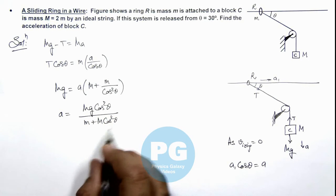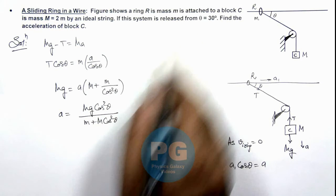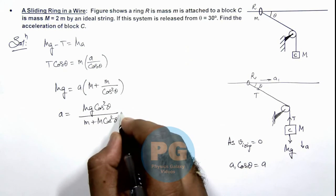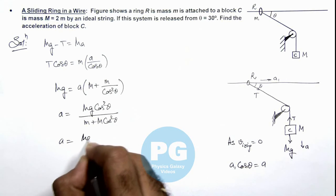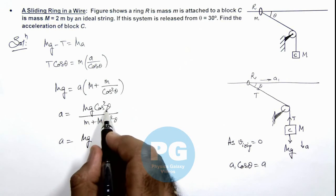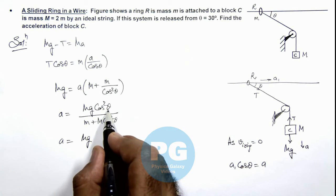So at this value of acceleration if we substitute the value of theta as 30 degrees, in the result what we are getting is mg multiplied by cos 30 degree. Here is root 3 by 2.